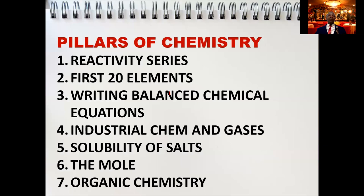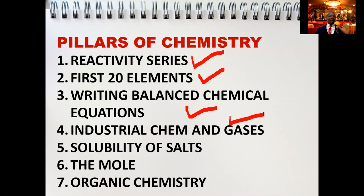Then we have what I call the pillars of chemistry — the commandments of chemistry. The first commandment is the reactivity series. Understanding the reactivity series enables you to understand electrochemistry and gas preparation — for example, why we don't prepare hydrogen using copper. You also need to know the first 20 elements, writing and balancing chemical equations, industrial chemistry and gases including nitrogen, sulfur, and chlorine, solubility of salts, and the mole concept — which alone could bring more than 30 marks. Then organic chemistry carries 30 marks. These are the seven commandments of chemistry, and those who don't follow them will never enter the kingdom of chemistry.